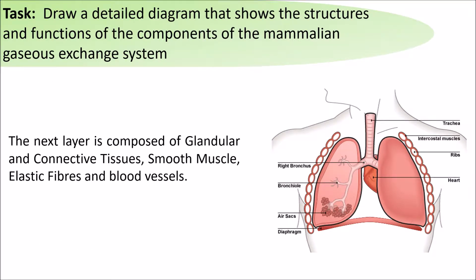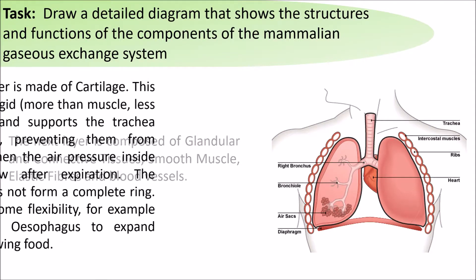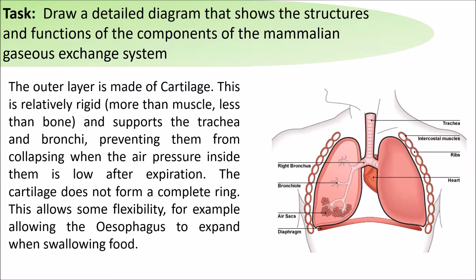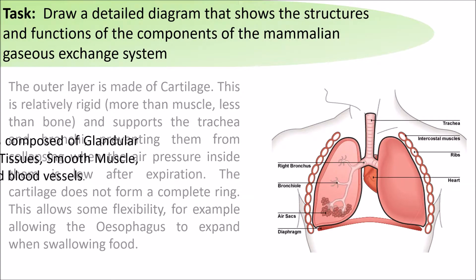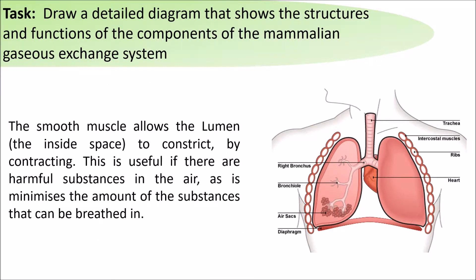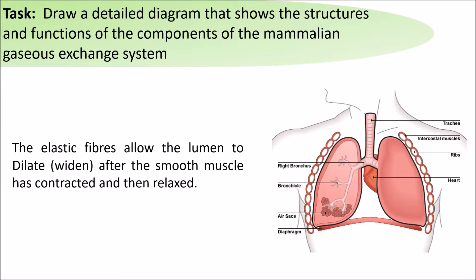The next layer is composed of glandular tissue, connective tissue, smooth muscle, elastic fibers, and blood vessels. The smooth muscle allows the lumen — the space inside — to constrict by contracting. This is useful if there are any harmful substances in the air, as it minimizes the amount of substances breathed in. The elastic fibers allow the lumen to dilate and widen after the smooth muscle has contracted and then relaxed.